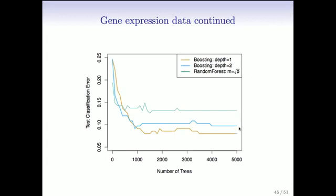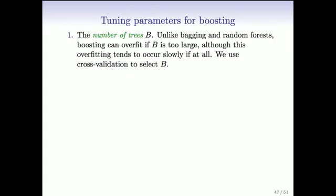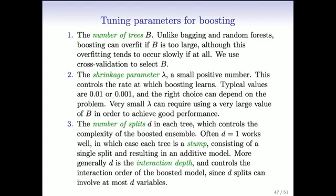The depth of the tree used in boosting becomes a tuning parameter. So there are a bunch of tuning parameters. The number of splits of the tree is one tuning parameter. The depth D — if D is one, it's simply a stump, which we saw was successful in the previous example. If D is larger, it allows interaction between predictors. Typically one tries a few values of D, maybe D equals one, two, four, and eight, depending on the size of your data set and the number of predictors.